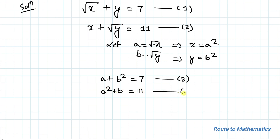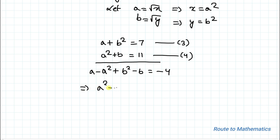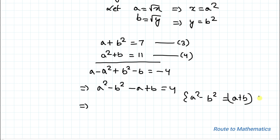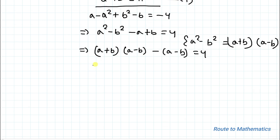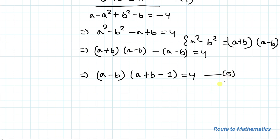Subtracting equation 4 from equation 3: (a − a²) + (b² − b) = 7 − 11 = −4. Multiplying both sides by −1: a² − b² − a + b = 4. Using the algebraic identity a² − b² = (a+b)(a−b), we get (a+b)(a−b) − (a−b) = 4. Factoring out (a−b): (a−b)(a+b−1) = 4. Call this equation 5.